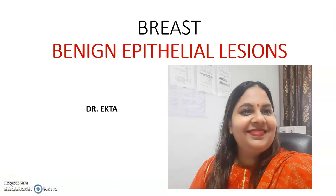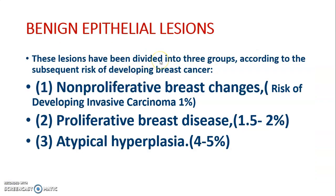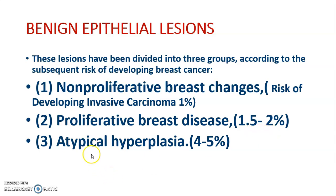Hello students, we are going to discuss benign epithelial lesions of breast. These lesions are divided into three groups according to the risk of developing breast cancer. First is non-proliferative breast changes, which has a risk of 1% going into invasive carcinoma breast. Then proliferative breast diseases with risk 1.5-2%, and third is atypical hyperplasia.